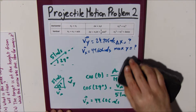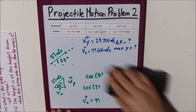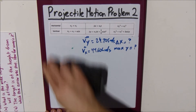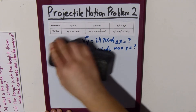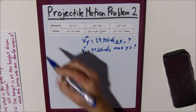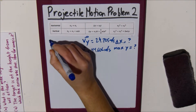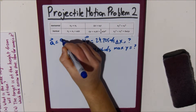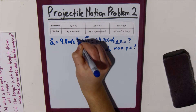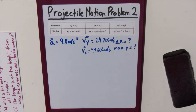Now that we have the velocity components, we can also note that acceleration is 9.8 meters per second squared, because gravity affects everything.